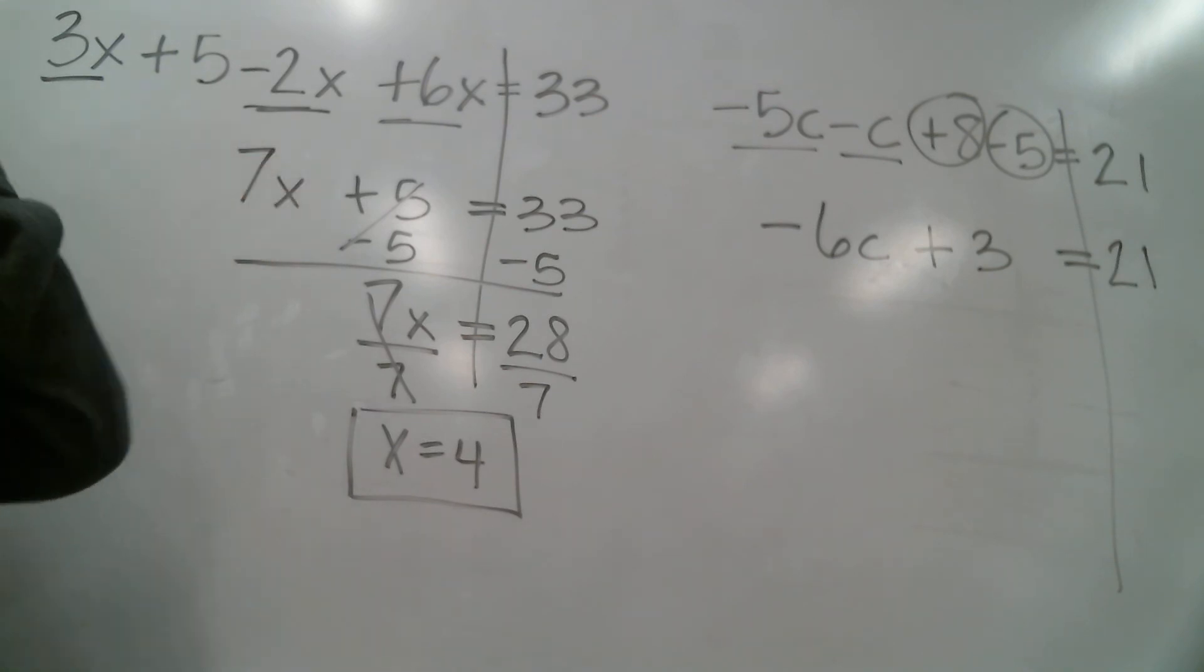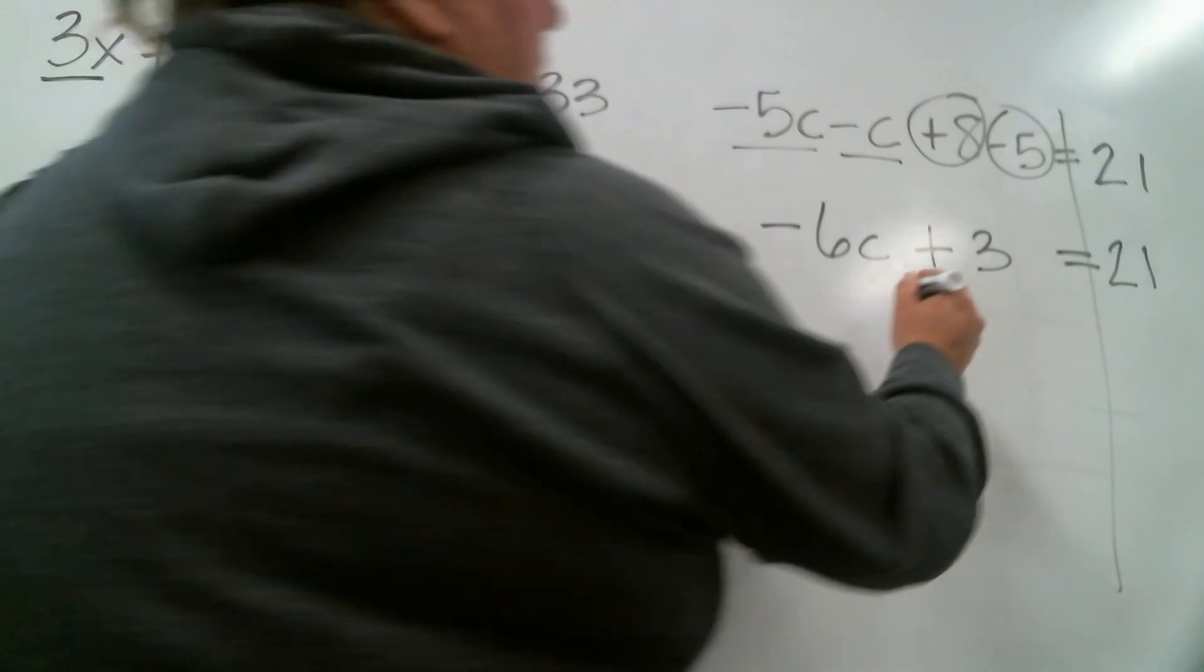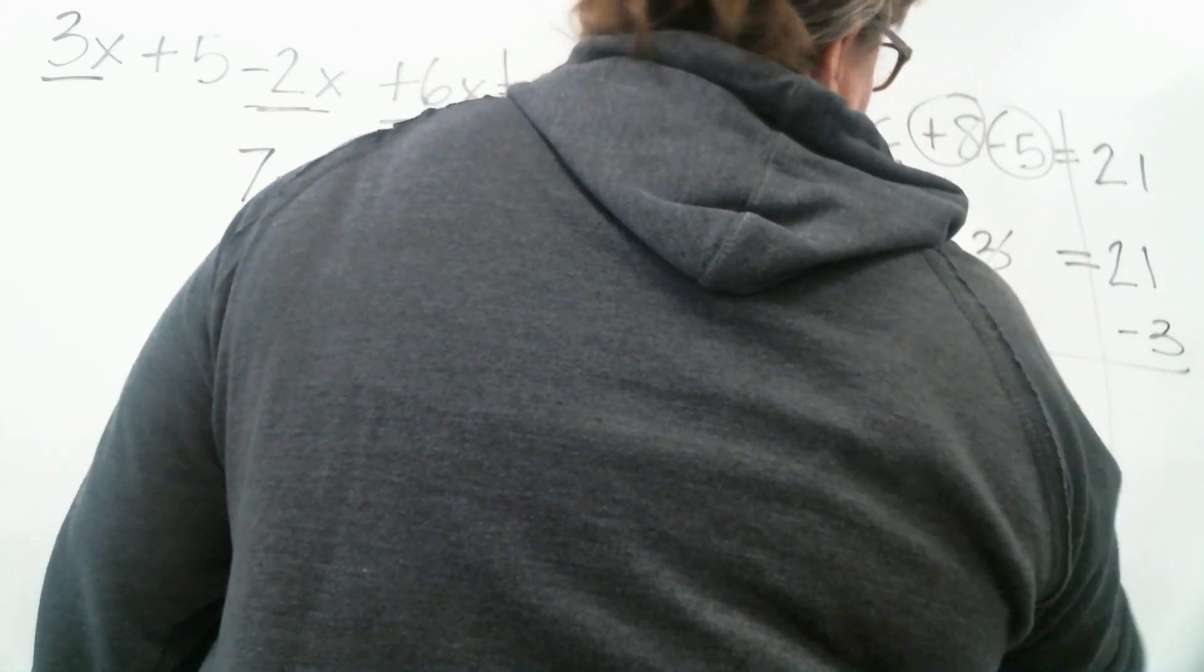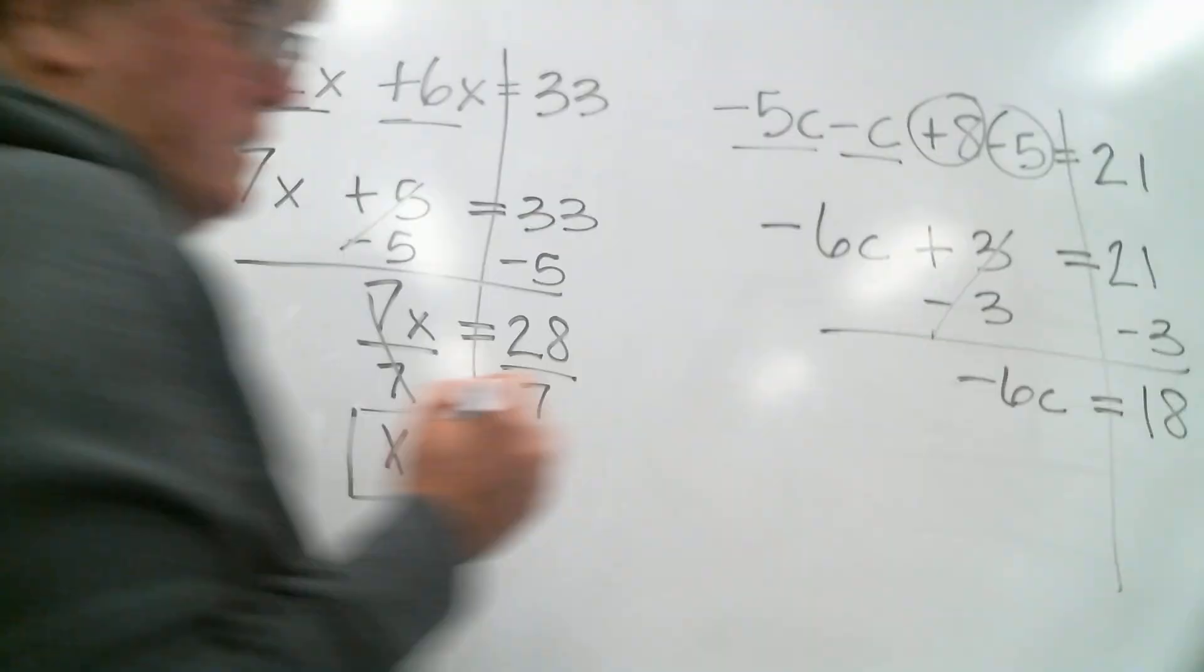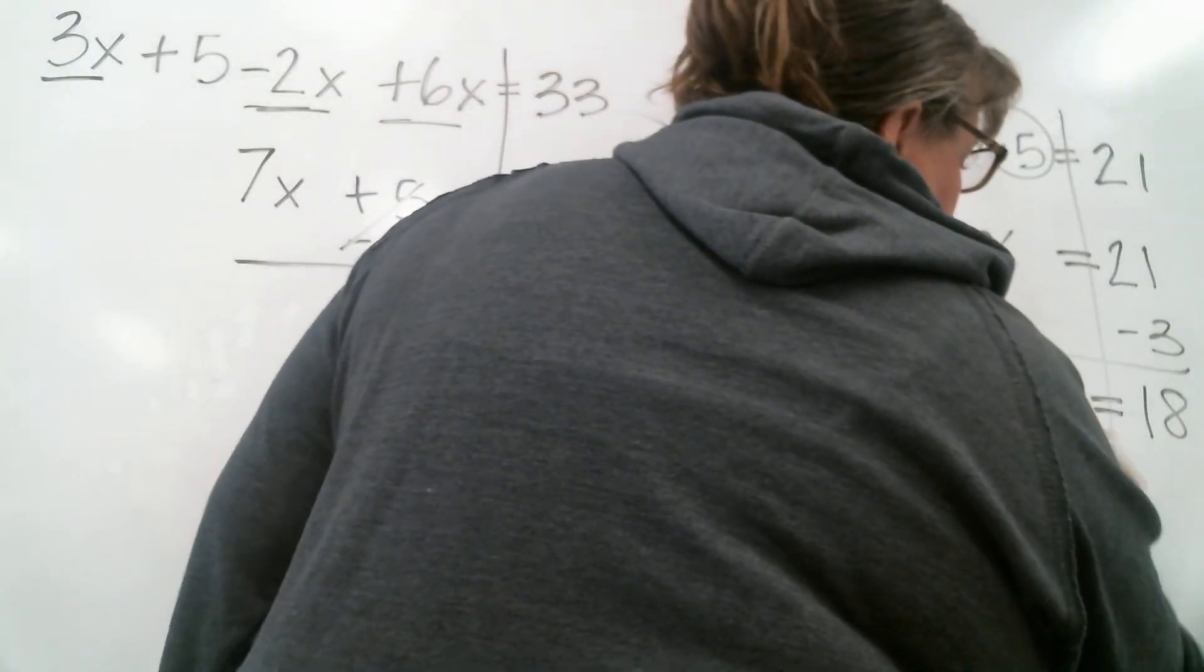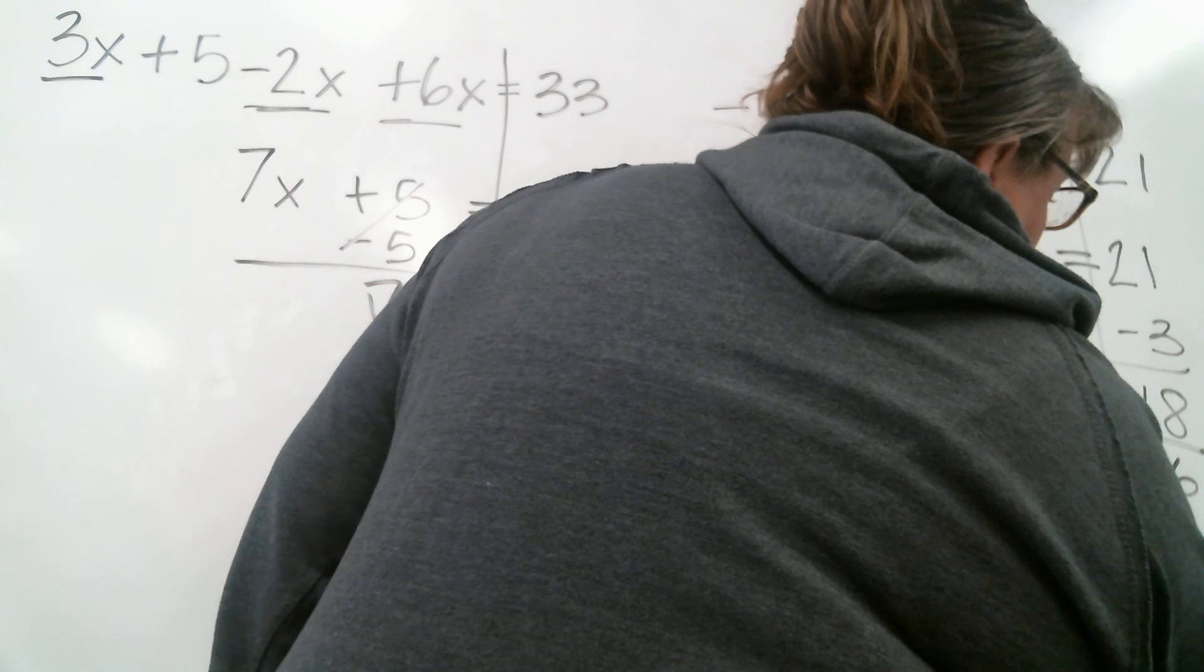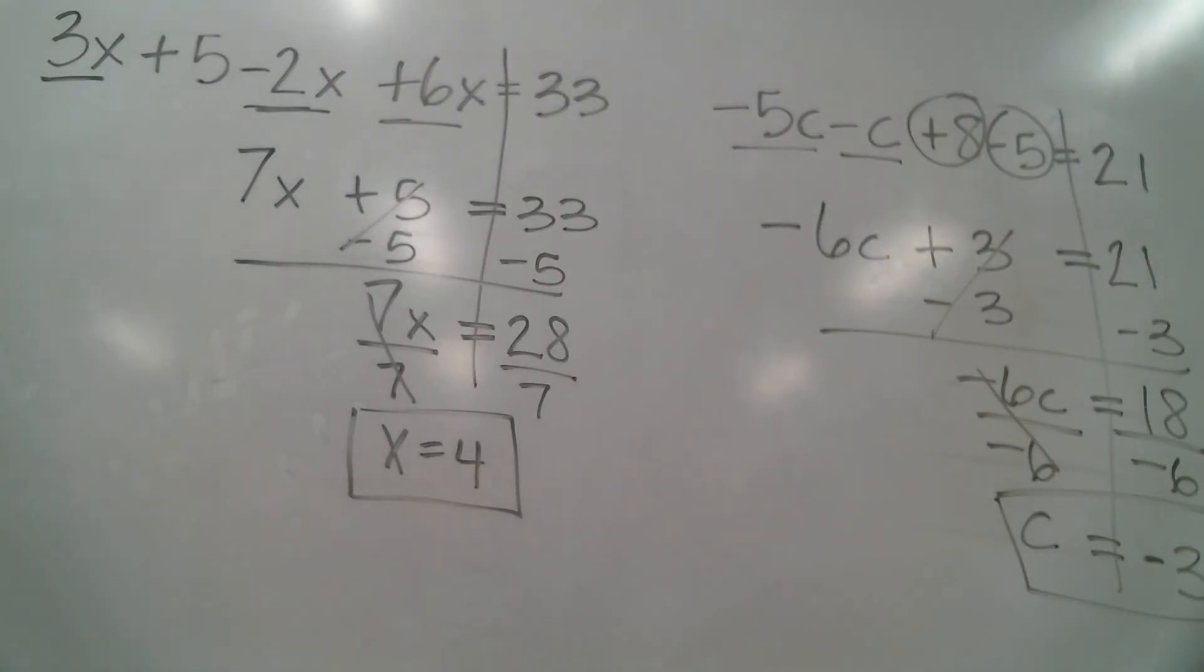Nothing's happening on the other side yet because the 21 was just over there by itself. Everything happened over here. We had to combine everything up. Now I'm ready to solve this just like a regular equation. I can subtract 3 from both sides and I get negative 6c equals 18. And so then my last step is just divide by 6. And I end up with c equals negative 3.